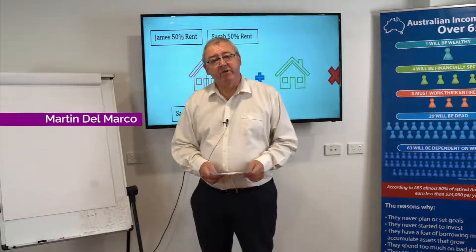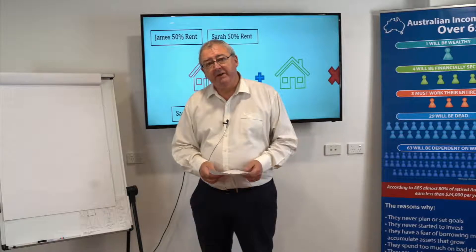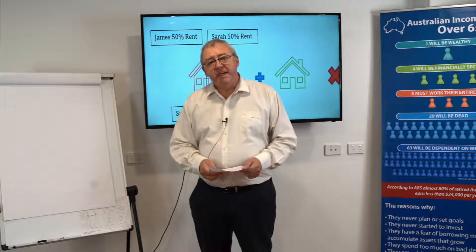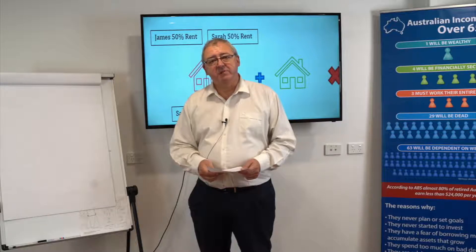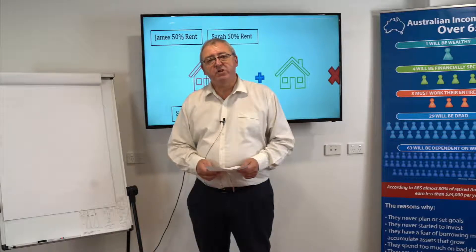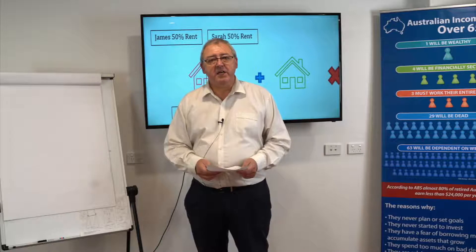Hi, my name is Martin from The Abundance Group. I wanted to talk to you today about a common problem we find with people who share investment lending with a family member. The example I wanted to use was Sarah and her brother James, who share an investment property together 50-50. The problem is that a majority of lenders consider that both parties have a hundred percent of the lending, when in fact they share it 50-50.